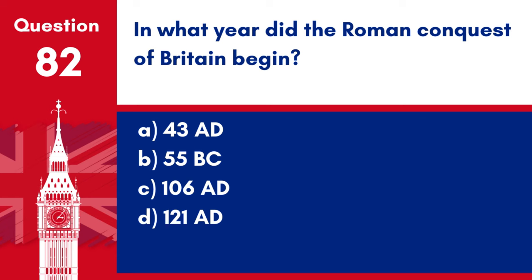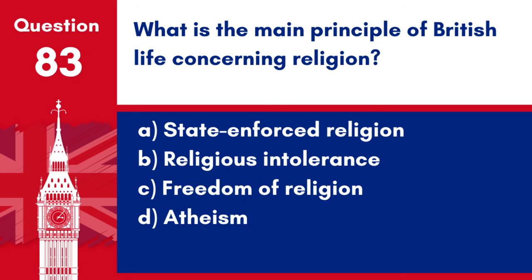Question 82. In what year did the Roman conquest of Britain begin? a. 43 A.D. b. 55 B.C. c. 106 A.D. d. 121 A.D. Answer: a. 43 A.D. The Roman conquest of Britain began in 43 A.D., marking the start of Roman rule over Britain for several centuries.